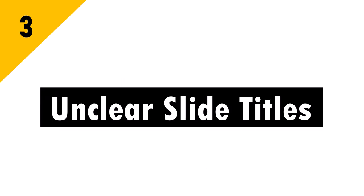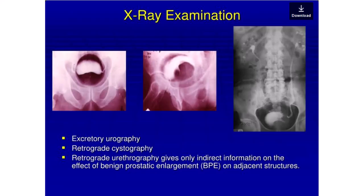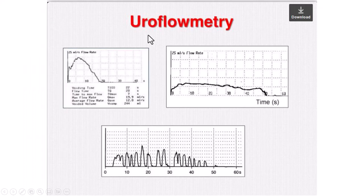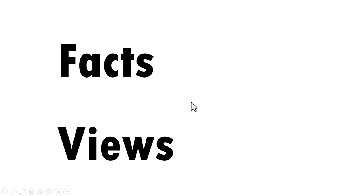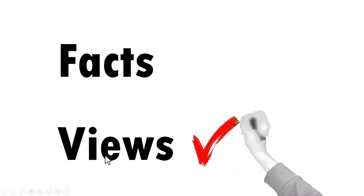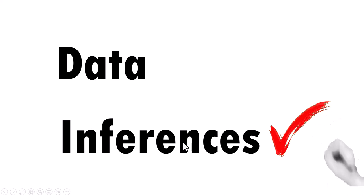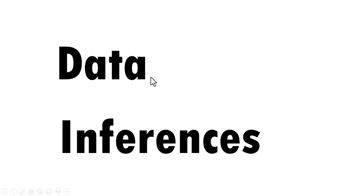The last big issue is unclear slide titles. This is one issue that I see every single time in medical presentations — slides with cryptic titles like 'X-ray examination,' 'IPSS,' or 'Uroflowmetry.' There is no way anybody can make any sense out of what you want to say from the slide based on these titles. Remember: your presentation is about your views first and facts next. So these views should be on your slide title right up front — your inferences right there in the title and the supporting data in the body content.